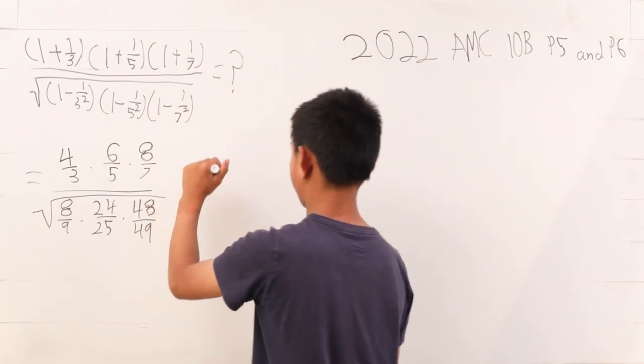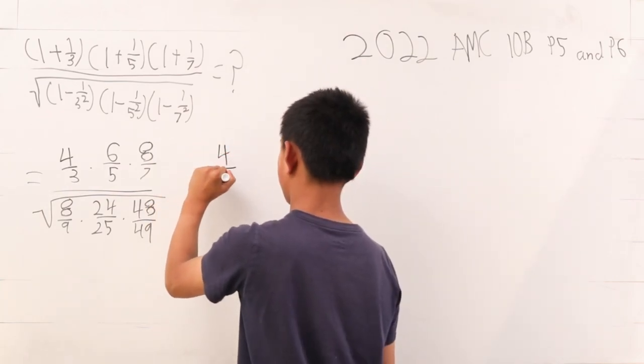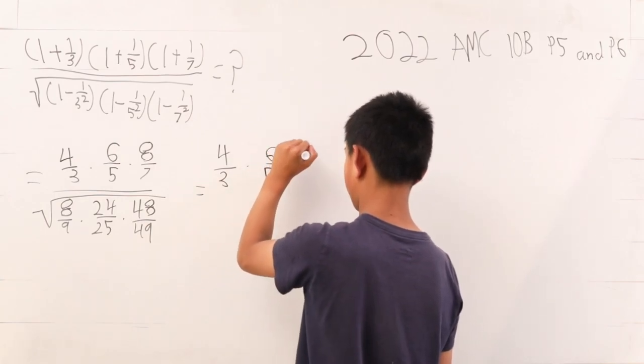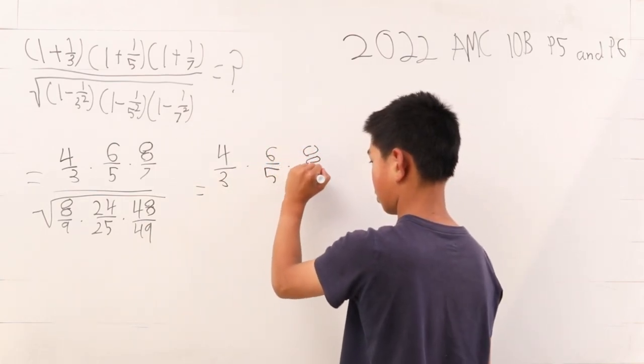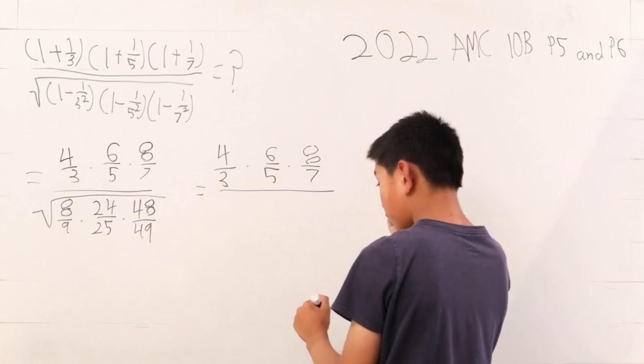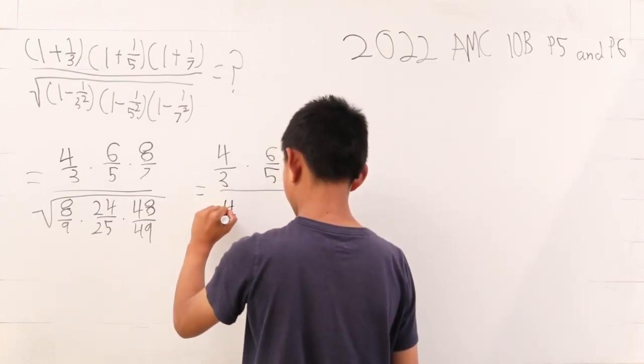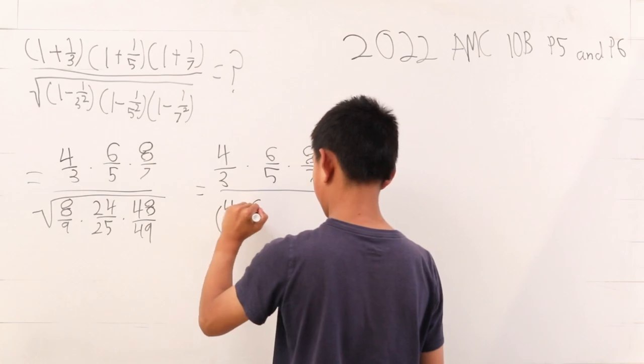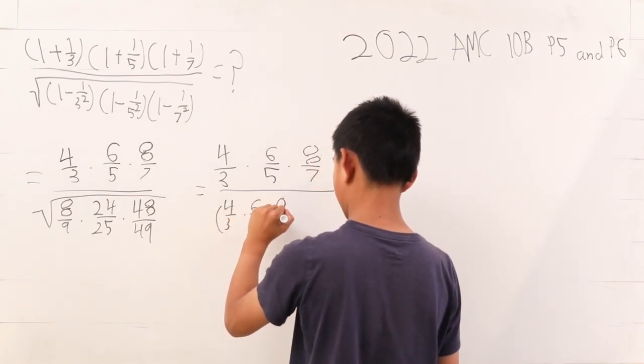So we can further break this up. The top stays the same: 4/3 times 6/5 times 8/7. And then you divide by this, which is 4/3 times 6/5 times 8/7.